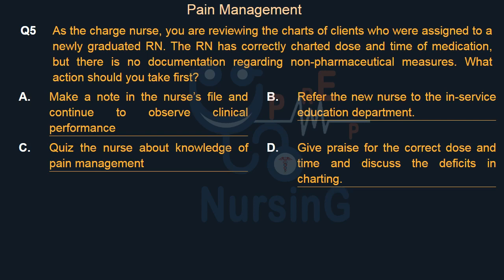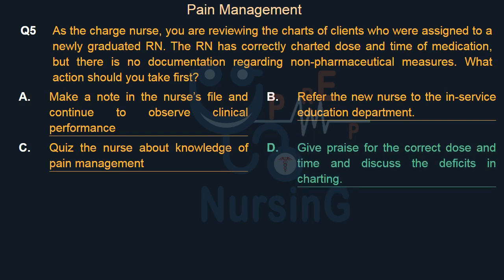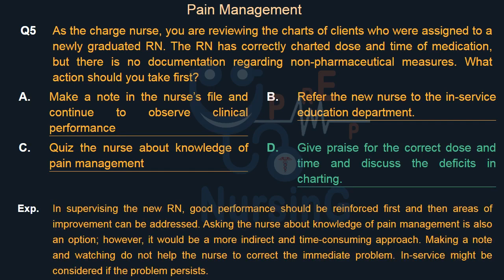Right answer is Option D: Give praise for the correct dose and time and discuss the deficits in charting. In supervising the new RN, good performance should be reinforced first, and then areas of improvement can be addressed. Asking the nurse about knowledge of pain management is also an option; however, it would be a more indirect and time-consuming approach. Making a note and watching do not help the nurse correct the immediate problem. In-service might be considered if the problem persists.